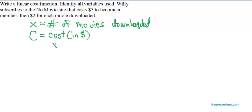So, for example, if Willy downloaded zero movies, if X is zero, what would his cost be? Not zero, because remember he had to pay a $5 membership fee. So, even if he downloads no movies at all, his cost is going to be $5.